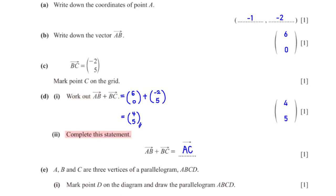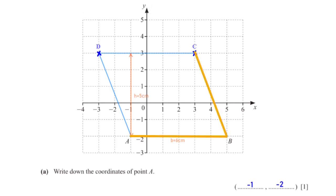Complete this statement: AB plus BC equals vector AC. Moving from A to B then B to C is the same as moving from A to C. A, B, and C are three vertices of parallelogram ABCD. Mark point D and draw the parallelogram. A parallelogram has opposite sides parallel, so we plot D such that CD is parallel to BA. To move from B to A we move 6 units to the left, so we move 6 units left from C to plot D, then connect the remaining lines.